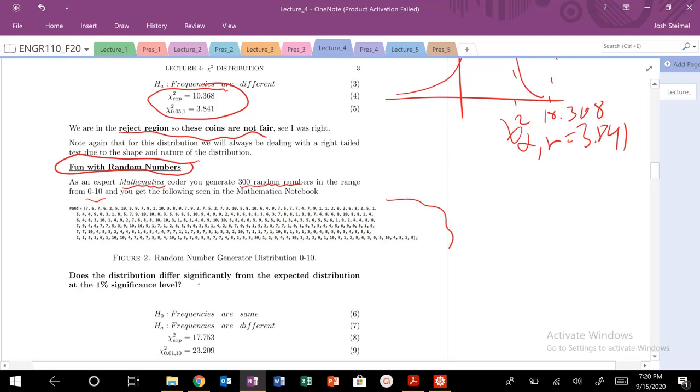Does this distribution differ significantly from the expected distribution at the 1% significance level? Let's go ahead and do our hypothesis testing. H-naught: frequencies are same. Alternative: different.